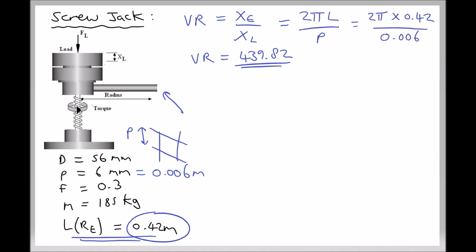Next we can determine our efficiency for lifting and lowering operations. The formula for efficiency is P over pi D times tan of beta plus or minus alpha. We've come across these terms alpha and beta in previous tutorials for the lead screw. Beta is the friction angle, whereas alpha is the angle of pitch of the threads. The plus or minus is dependent on whether we're lifting or lowering, which we'll discuss in a moment.